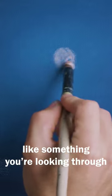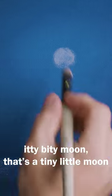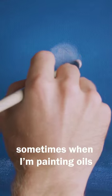I want a fairly large moon, like something you're looking through a telephoto lens, not just a tiny little moon. I'm just dry brushing it in. Sometimes when I'm painting oils I'll just set my brush down there and rotate it.